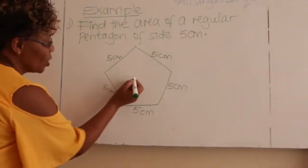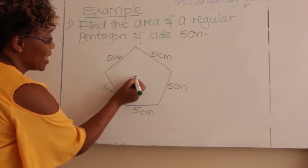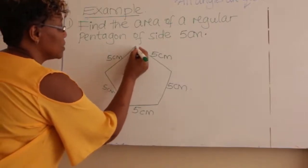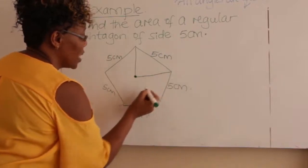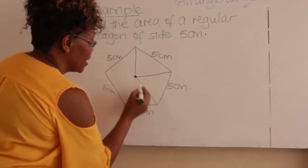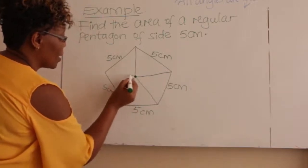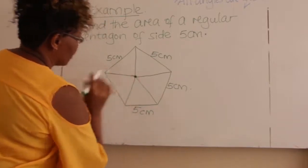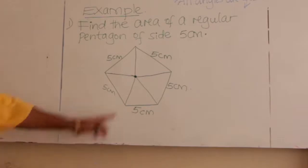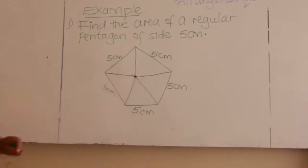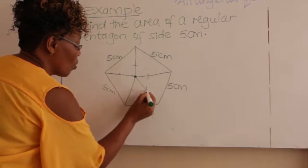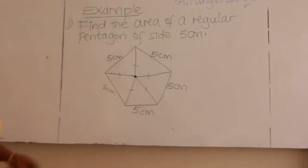What you do is introduce a center point, and then using the center you form triangles — like that. This is the center of our polygon. The lines from the center to the vertices are called radii, and all these radii are equal for a regular polygon.